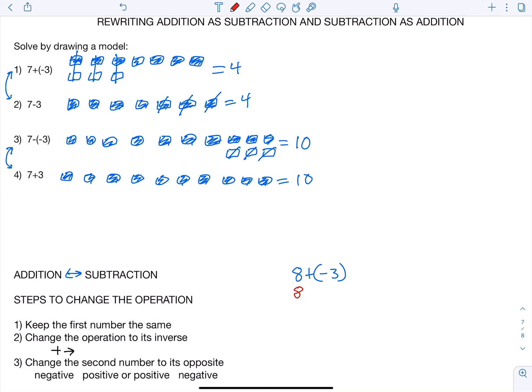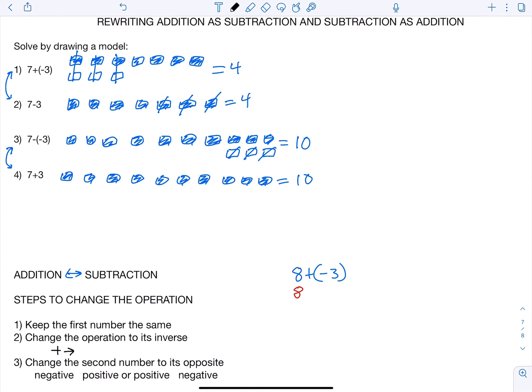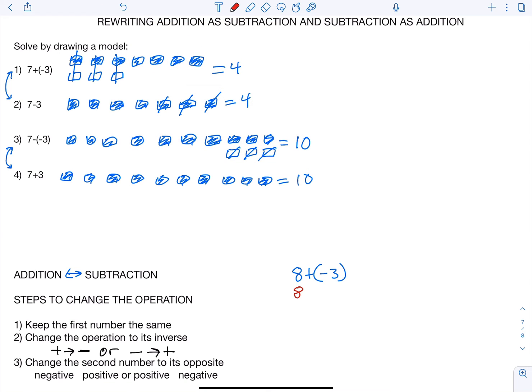It says change the operation to its inverse. So that means if I have addition, I'm going to change it to subtraction like this. Or if I have subtraction, I'm going to change it to addition. So going back over here, I had 8, keep the first number the same, change the operation to its inverse, so it turns into subtraction.